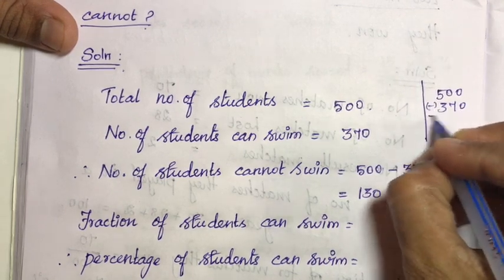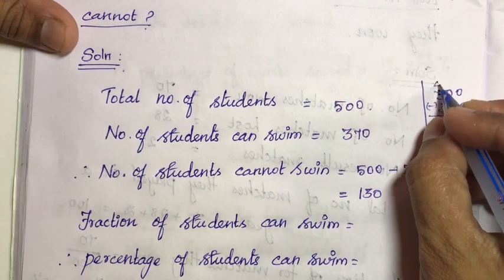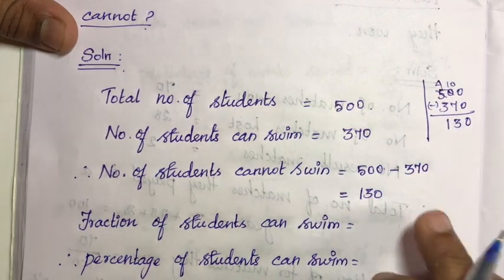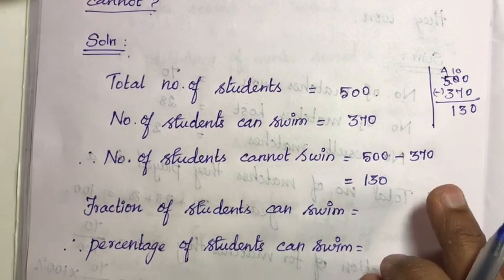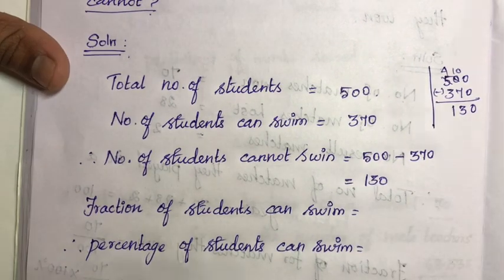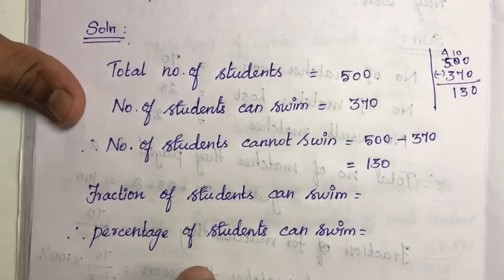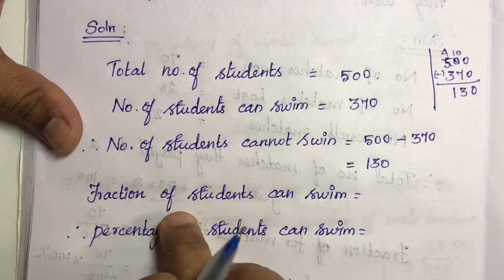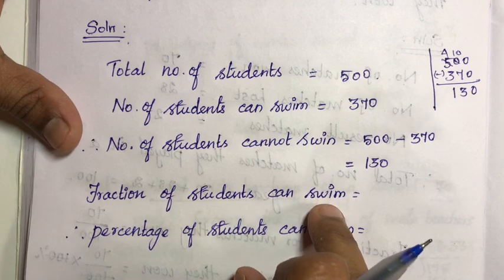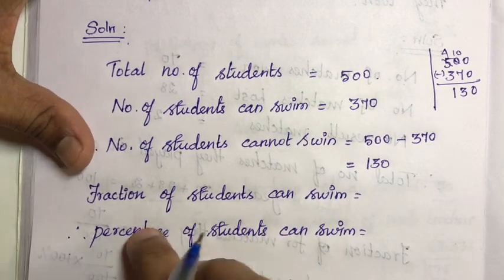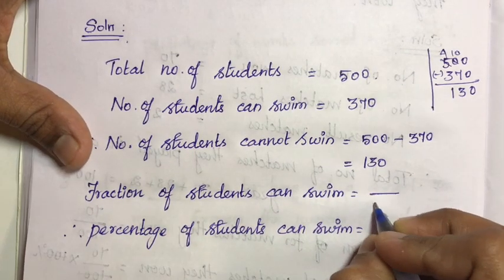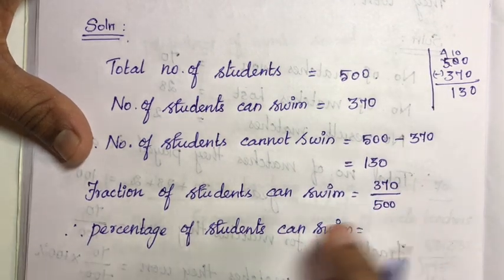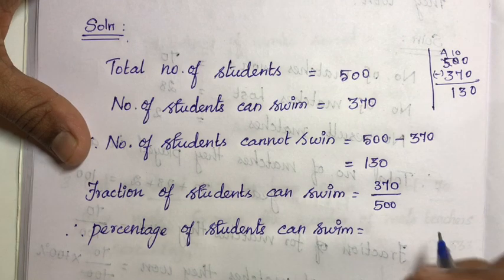Subtract: this becomes 4 and this becomes 10; 10 minus 7 is 3, 4 minus 3 is 1. So 130 students cannot swim. We need to find the percentage of students who cannot swim. First, find the fraction of students who can swim.